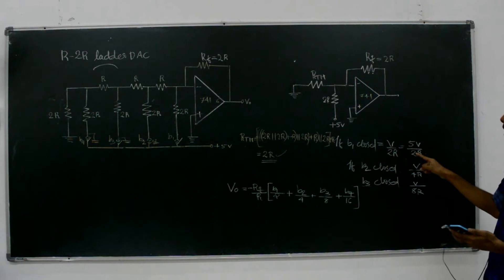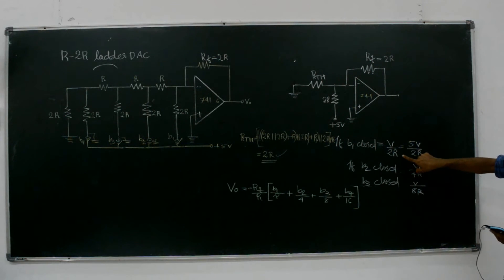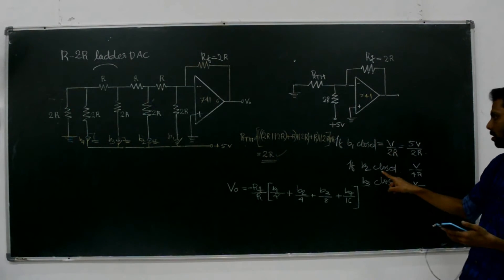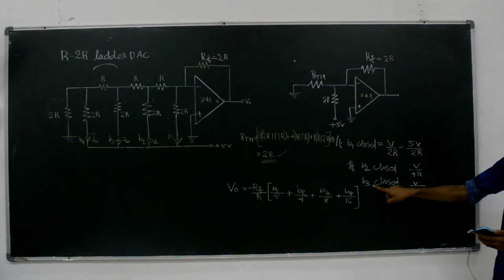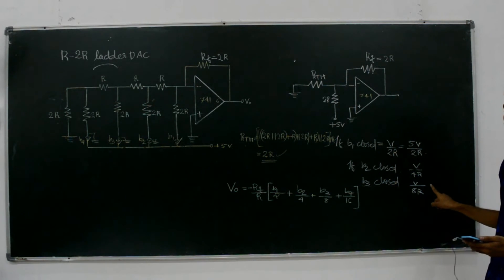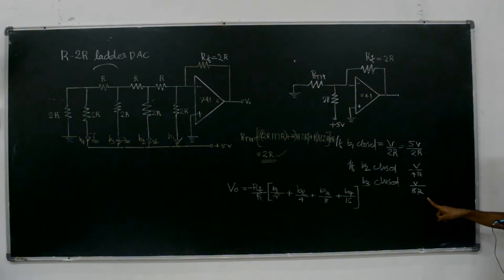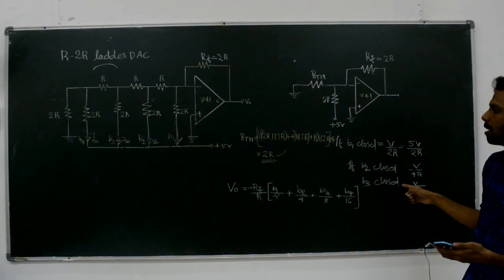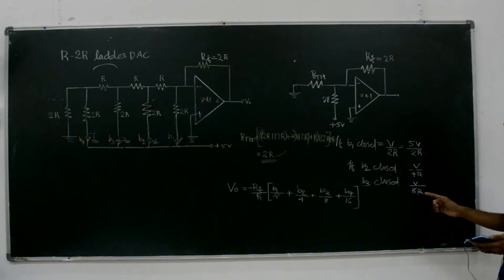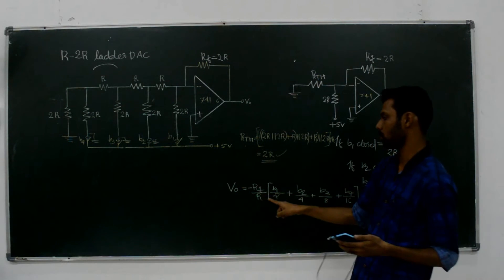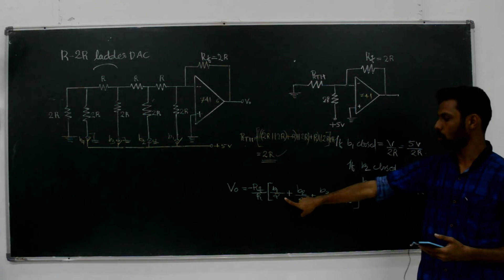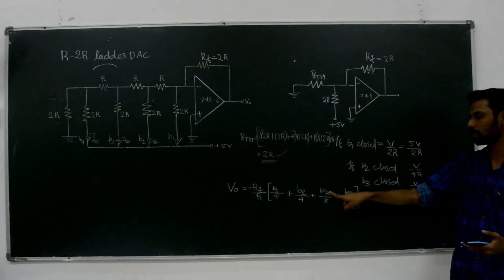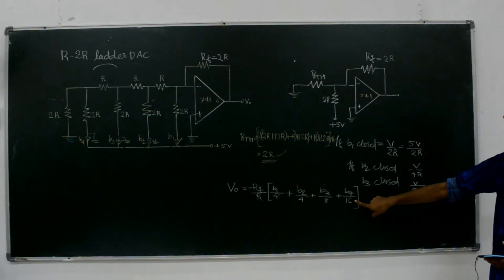The op-amp input terminal acts as virtual ground, so it is at zero potential and no current flows through resistor Rth. From the loop with 2R and Rf, we get an output of Vout equal to 5 volts by 2R when B1 is closed. If B2 is closed we get V by 4R, and if B3 is closed we get V by 8R. From these cases we can generate a general expression: Vout equals minus Rf by R, multiplied by the quantity B1 by 2 plus B2 by 4 plus B3 by 8 plus B4 by 16.